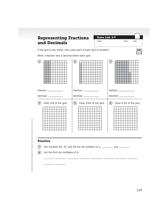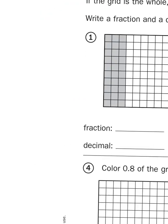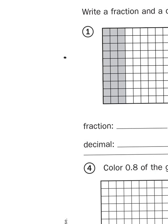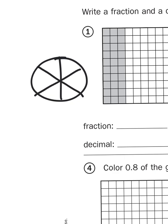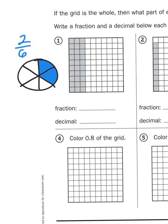If you take a look at the first row of problems, it says write a fraction and a decimal below each grid, and the picture represents a fractional amount. Now typically we've been dealing with fractions that look something like a circle cut up into parts. These grids however are just a representation of a possible 100 parts because the grid is broken up into 10 rows with 10 boxes in each row.